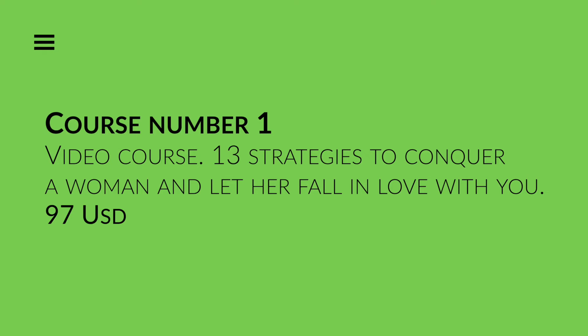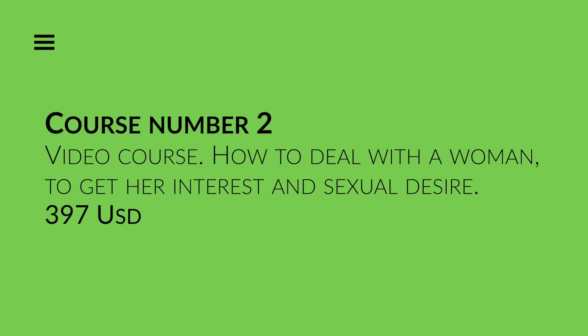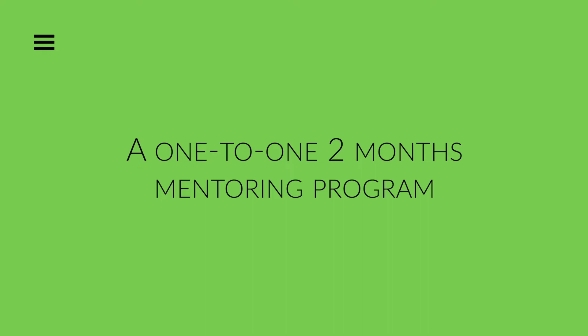This is why you plan to sell two online courses and one service. Course number one: a video course — '13 strategies to conquer a woman and let her fall in love with you' — priced at 97 USD. Course number two: a video course — 'How to deal with a woman to get her interest and sexual desire' — priced at 397 USD. Then a service: a one-to-one two-month mentoring program with a one-hour weekly call, priced at 1,997 USD.